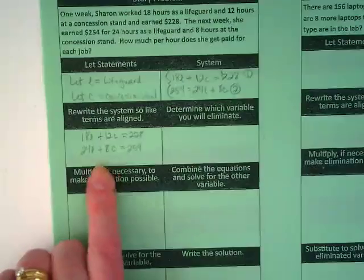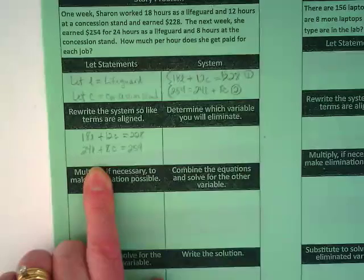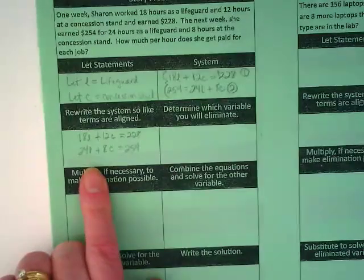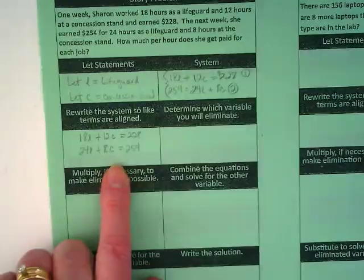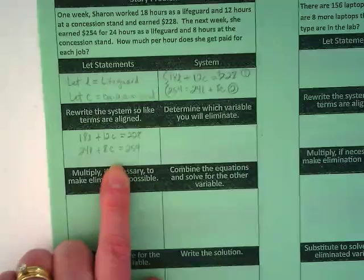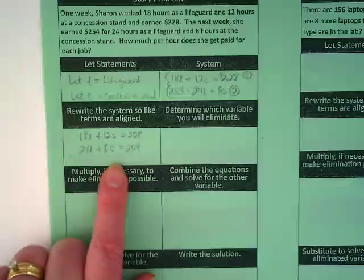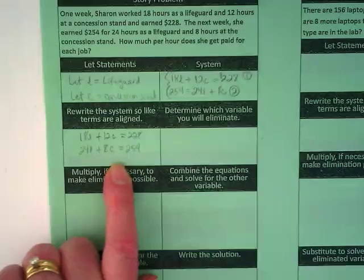Let's take a look here. 18 and 24, is it going to be easy to multiply one of these by something and get rid of it? What about the C terms? The thing is, when I look at the C terms, I have 12C and I have 8C. I want to turn them both into 24.